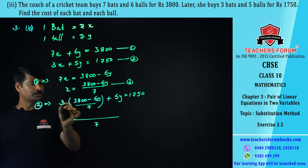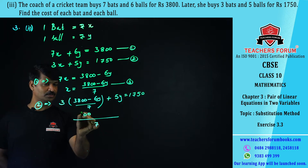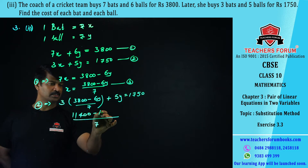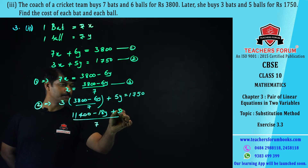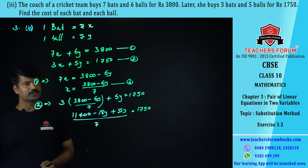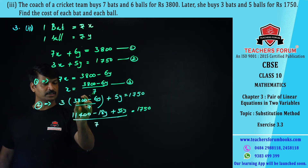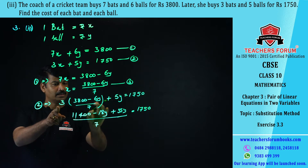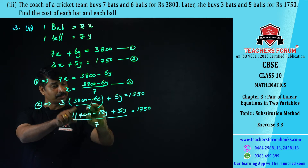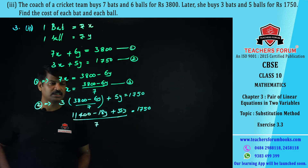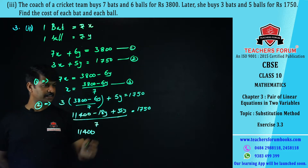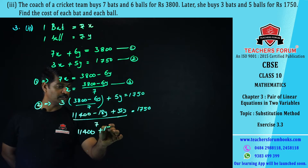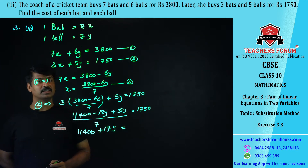So the equation becomes: (11400 − 18y + 35y) / 7 = 1750. That gives 11400 + 17y = 7 × 1750. Calculating 7 × 1750 = 12250. So 17y = 12250 − 11400.